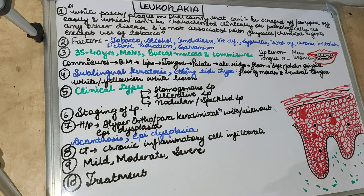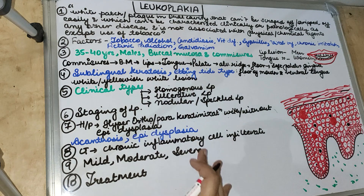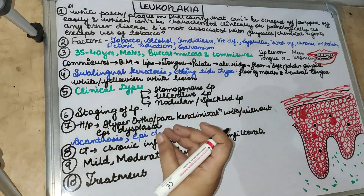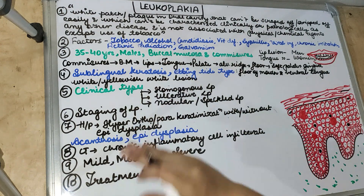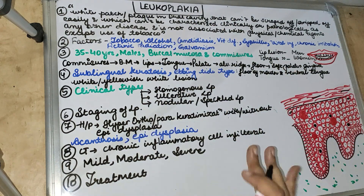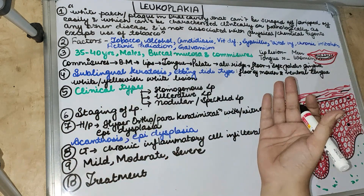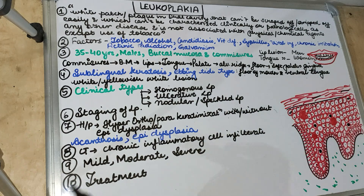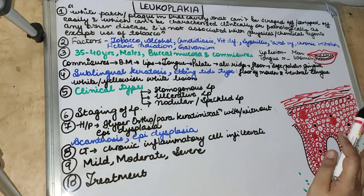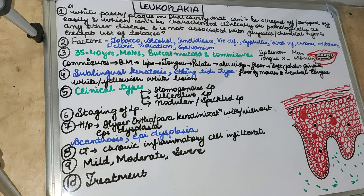Before we get started, make sure to subscribe to our channel and click on the bell icon. Leukoplakia is a pre-malignant lesion — a white patch present in the oral cavity, mostly seen in the buccal mucosa. This patch cannot be rubbed off, unlike candidiasis which can be easily rubbed. So the white patch or plaque in the oral cavity that cannot be scraped off and cannot be characterized as any other disease, except associated with tobacco use.